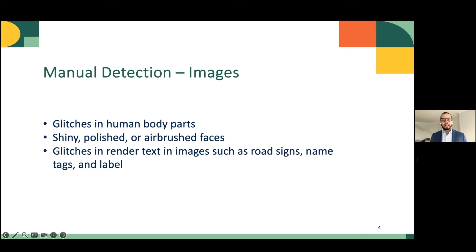Photos and videos could be analyzed manually too. AI content sometimes has glitches in individual body parts, including a human with extra fingers, body parts that are not connecting, small hands, and others. Also, photos created by AI, especially of people, often look a bit shiny, like they have been polished or airbrushed. In some cases, AI struggles to render text in images, such as road signs, name tags, and labels — so look for all of these signs.